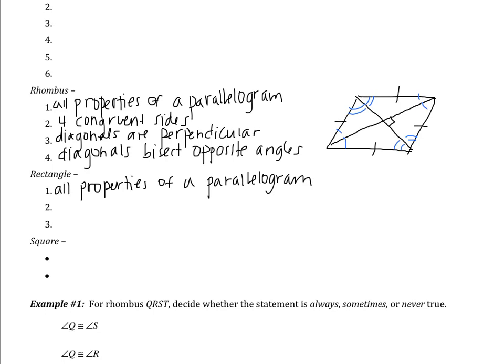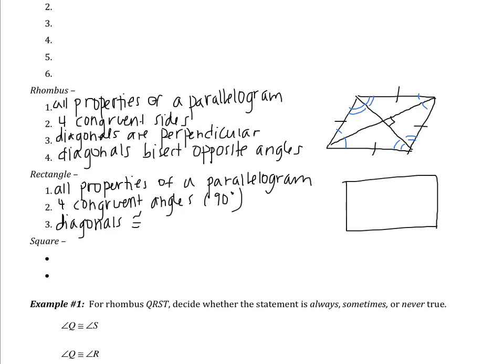A rectangle — you've definitely heard this one before. It's still a parallelogram, so it has all the properties of a parallelogram. It also has four congruent angles — all of them are 90 degrees, so a rectangle has four right angles — and the diagonals are congruent. One thing to clarify: a rectangle is not a rhombus. A rectangle and a rhombus are two completely different figures. They're both parallelograms, but they're not the same beyond that.